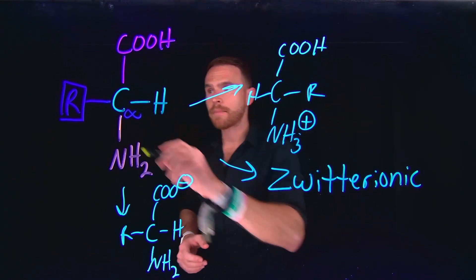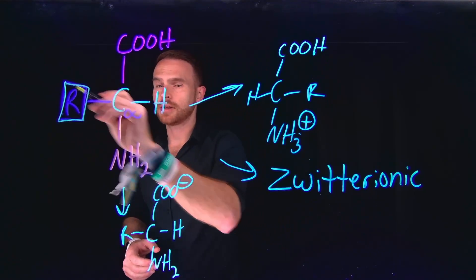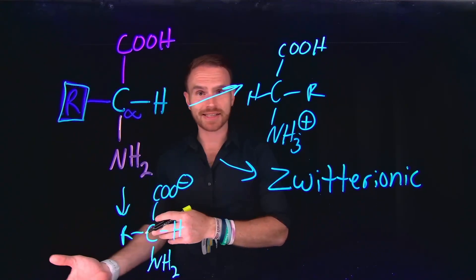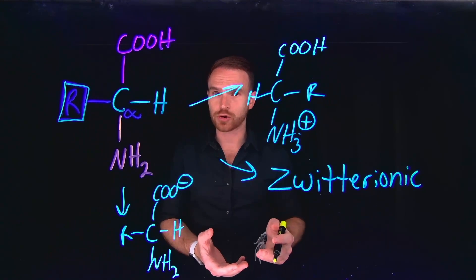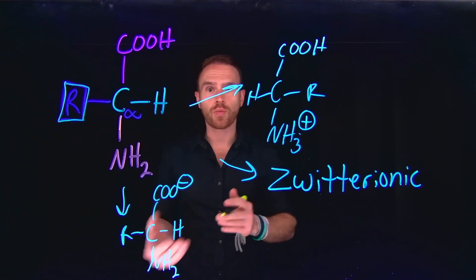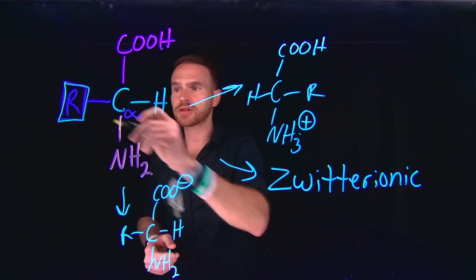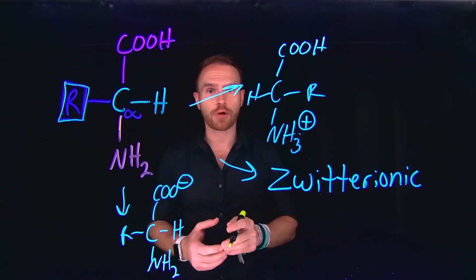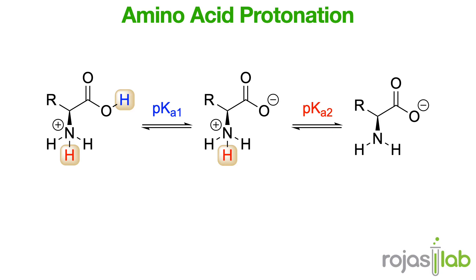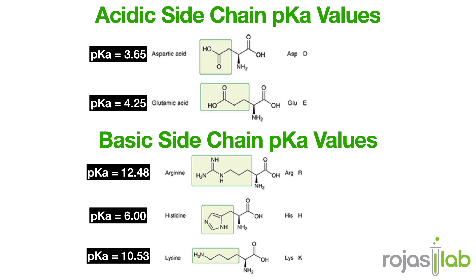Importantly, the R group side chain can also exist as an acidic or basic functional group. This means we need to consider the relative pKa values of each of these functional groups when determining the protonation state at given pHs. Each of the highlighted protons has its own unique pKa value, often called pKa1 and pKa2. Amino acids that contain either acidic or basic groups have a third pKa value associated with the side chain. These are shown currently on the screen in the table.